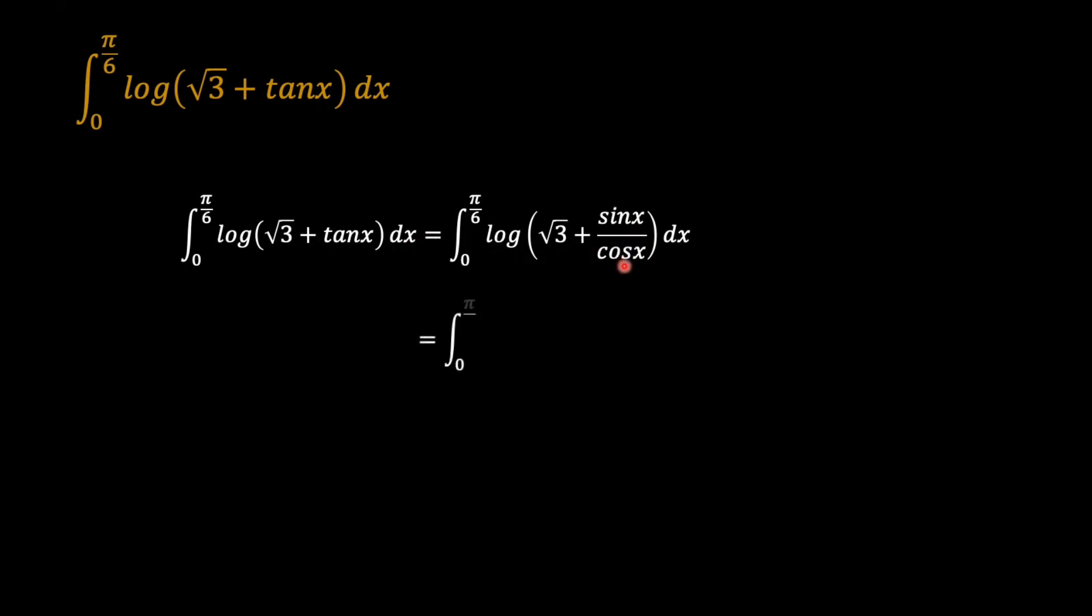So forward to the solution to this problem. The first thing that I'm inclined to do is I'll look at root 3 here and then tan x. So I'll express tan x as the ratio of sine x and cosine x. And then we're going to create cosine x as the common denominator. So we have root 3 cosine x plus sine x over cosine x.